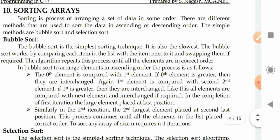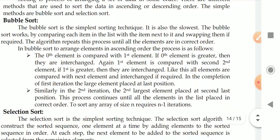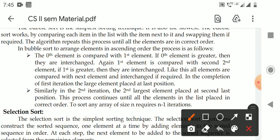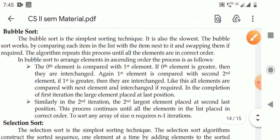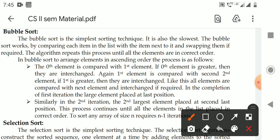Now we will see how elements are arranged in ascending order using bubble sort. Generally, among all sorting techniques, bubble sort is a very simple sorting technique, but it is the slowest. The bubble sort compares each item in the list with the next one and swaps them if required.